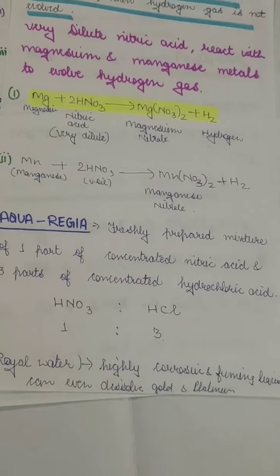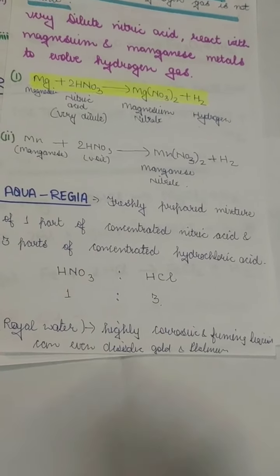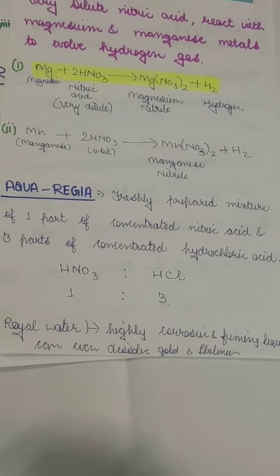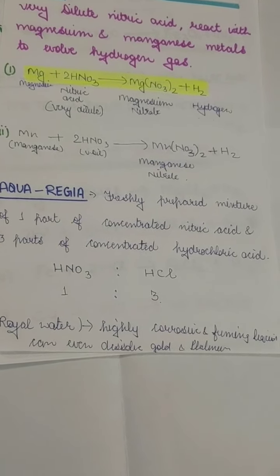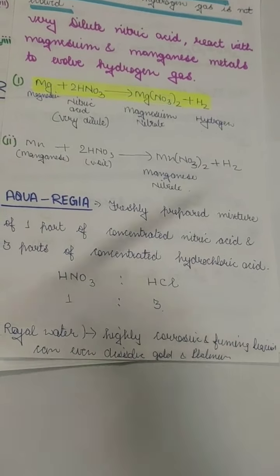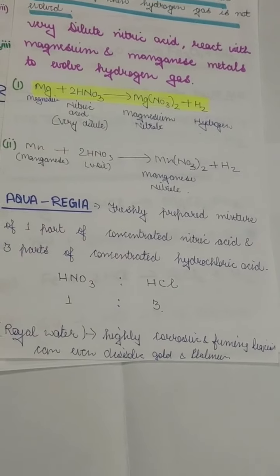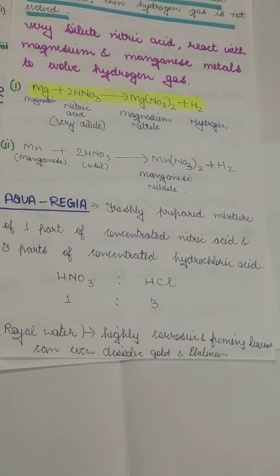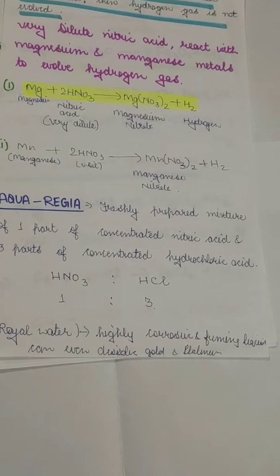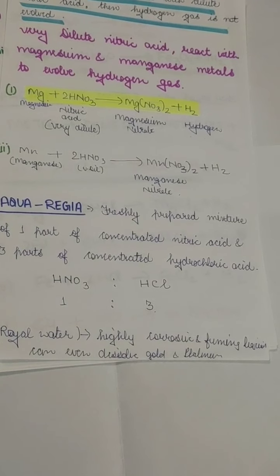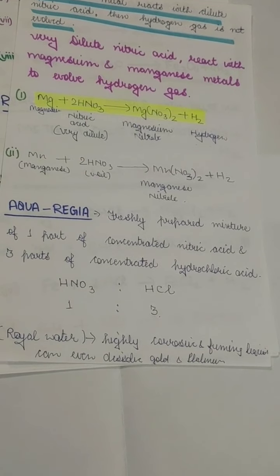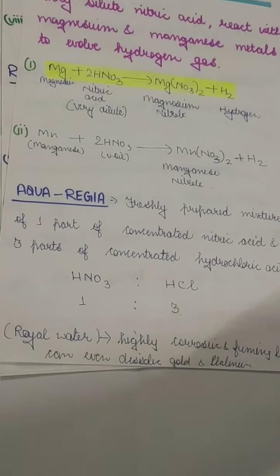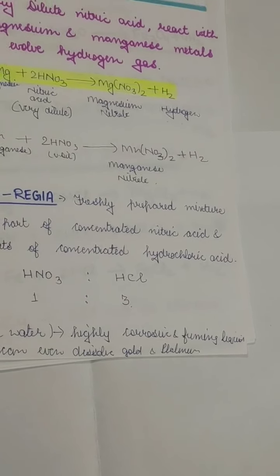After this, we will cover aqua regia. Aqua regia is a freshly prepared mixture of one part of concentrated nitric acid (HNO₃) and three parts of concentrated hydrochloric acid (HCl). It is also called royal water and is a very highly corrosive and fuming liquid that can even dissolve gold or platinum — the least reactive elements. After this, we will cover our last topic: reaction of metals with salt solution.